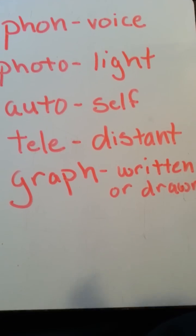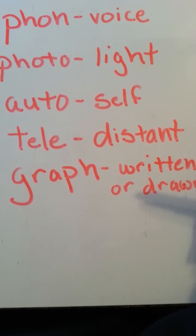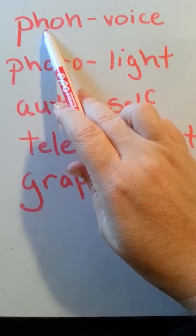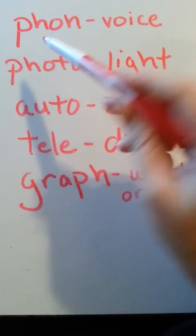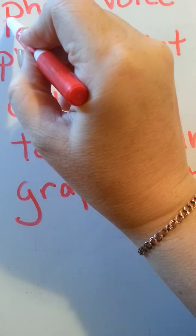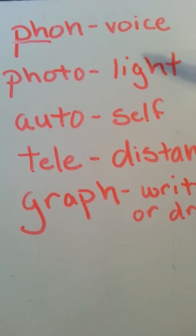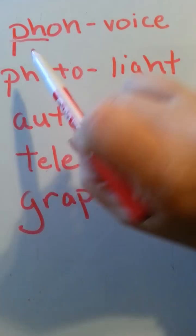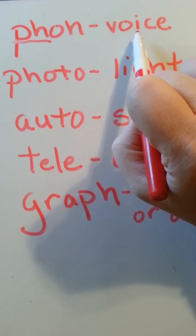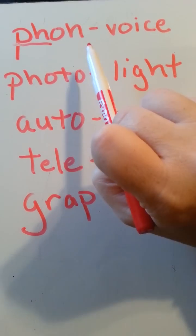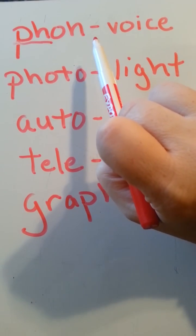This week we're looking at Greek and Latin word parts. We're going to start with phone. You remember that the combination of PH gives us an F sound, so phone. The meaning of this prefix — or suffix — is voice.